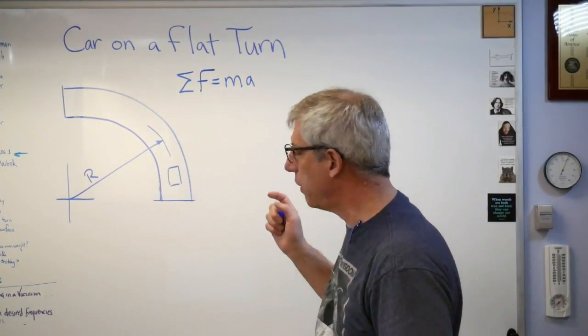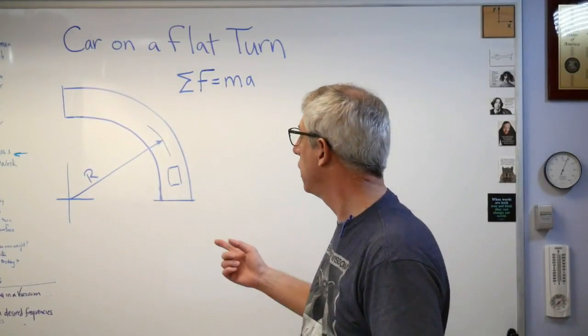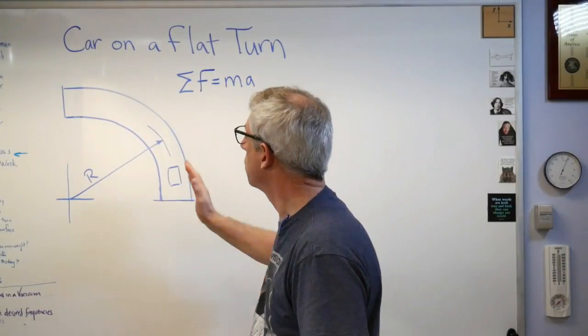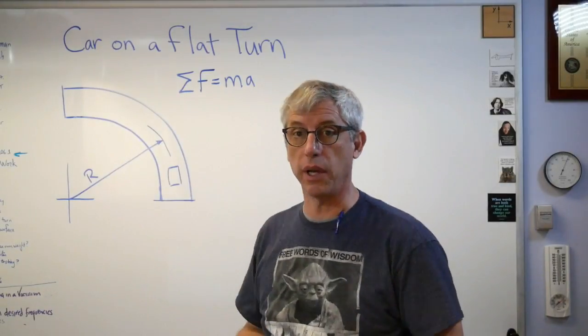If you're going around a turn, you have to be accelerating. Acceleration is what makes you change your velocity. My velocity direction keeps turning. The direction of the car keeps turning, so my velocity vector is changing. There must be acceleration.